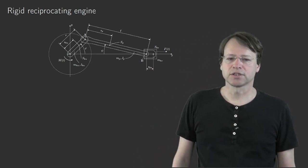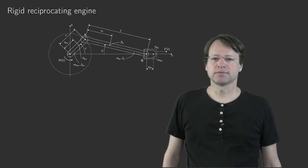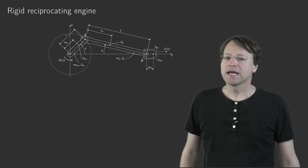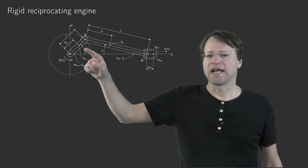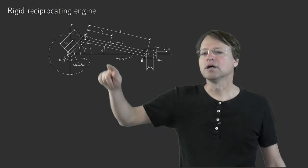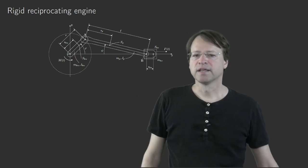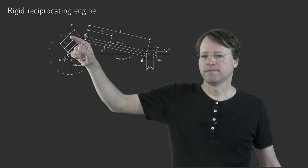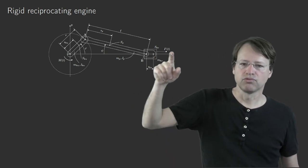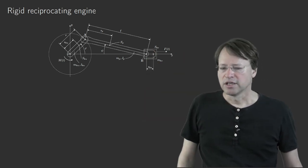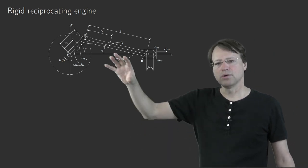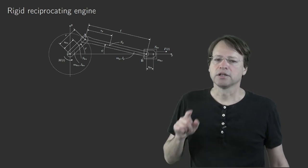Hello and welcome to the last video in this course on machine dynamics. This video deals with the rigid reciprocating engine or the slider-crank mechanism. The slider-crank mechanism consists of a crank that rotates, where the endpoint A moves on a circular path. A connecting rod links that circular motion to the piston or cylinder, which moves on the x-axis in linear motion. This makes the motion of the whole slider-crank mechanism periodic but non-harmonic.